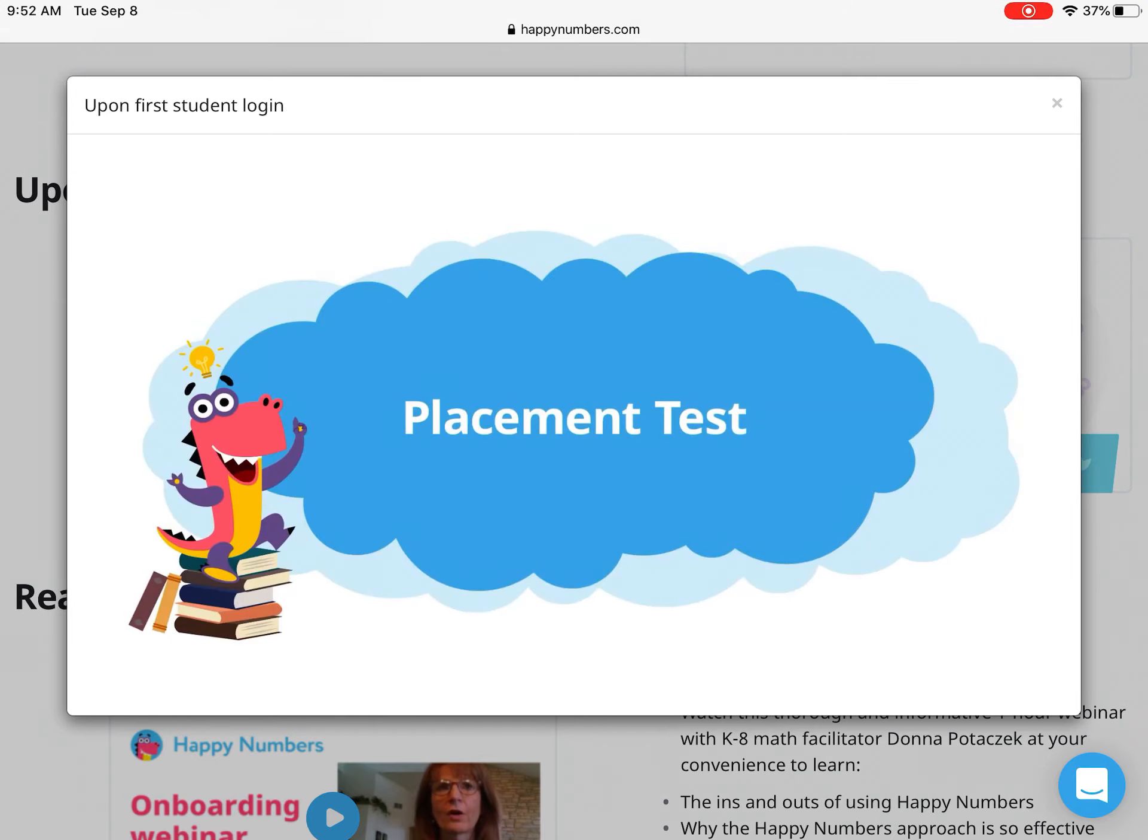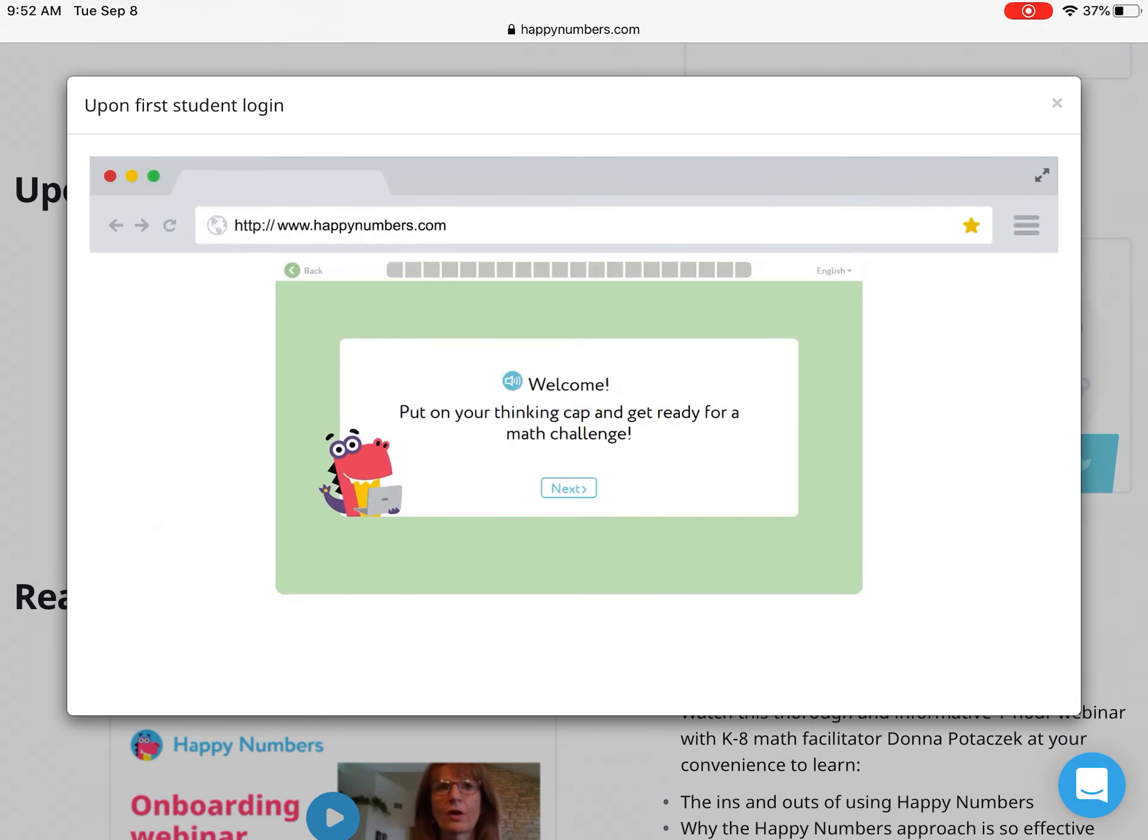Placement test. Upon first login, students will take a 20-question placement test to determine their appropriate starting point in the curriculum. Note that this is when the language menu first appears in the top right corner of the screen. To switch between English and Spanish, just use that pull-down menu anytime. Both the written and spoken text will reflect in the chosen language.